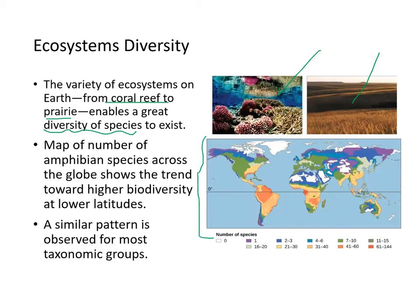A map of amphibian species shows a trend towards higher diversity at lower latitudes. Here's the equator, and the higher diversity is shown in red colors. This pattern of higher diversity is actually observed for most taxonomic groups.